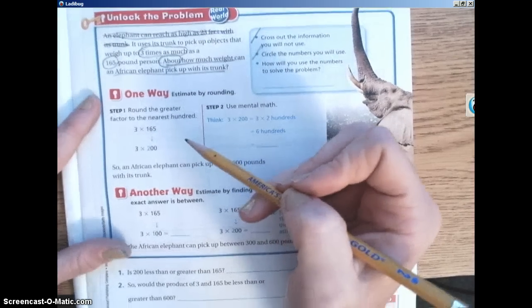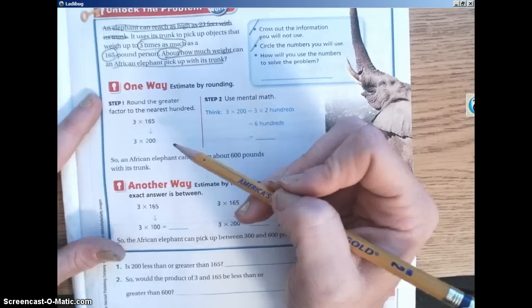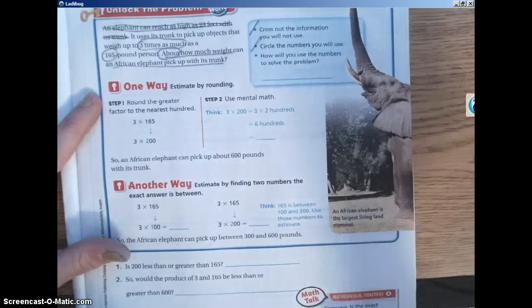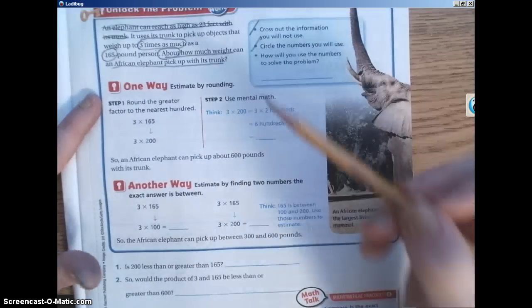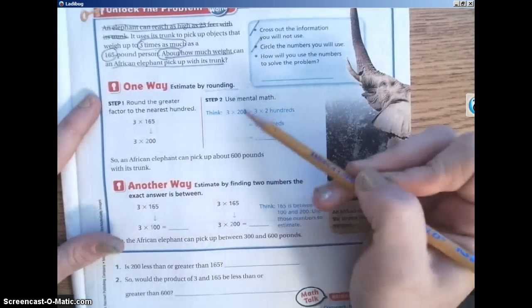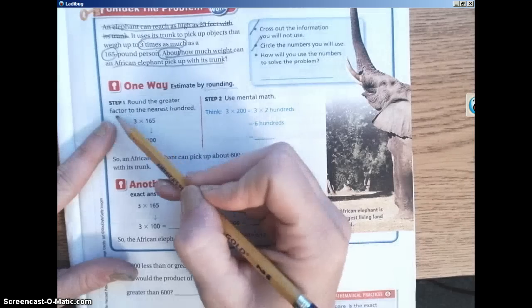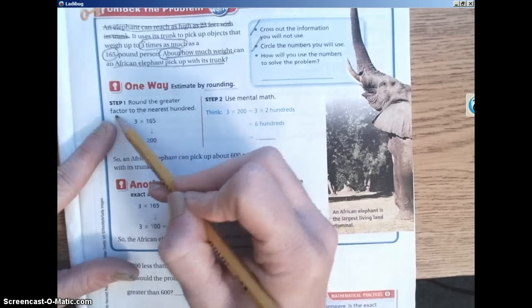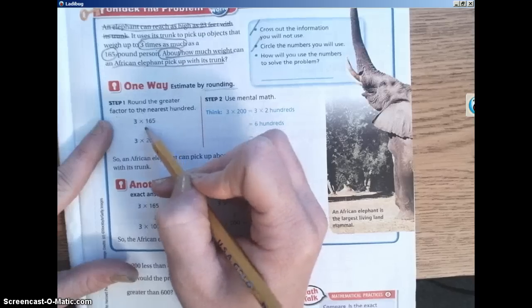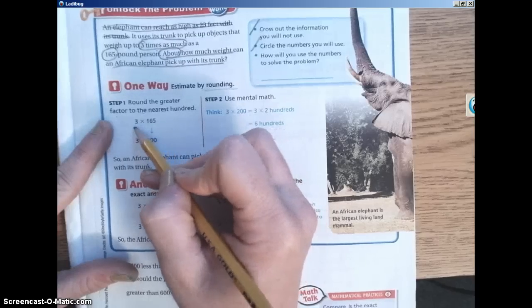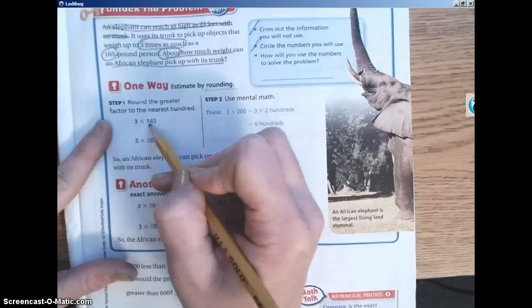Let's go ahead and move on down to one way. We're going to estimate by rounding. We know that when we estimate, we can't just estimate in our heads. We need to use the strategy of rounding. So round the greater factor to the nearest hundred. So three times 165 are the two factors.